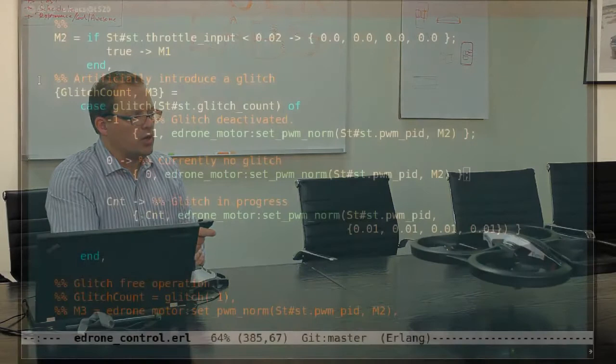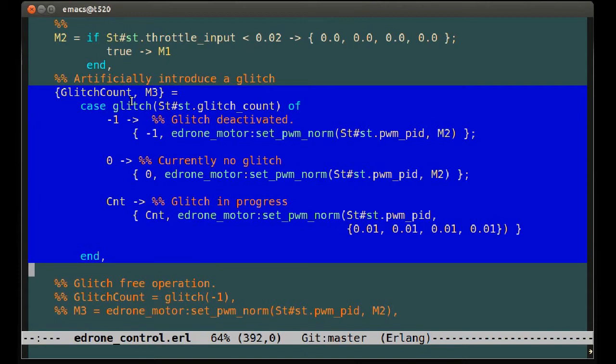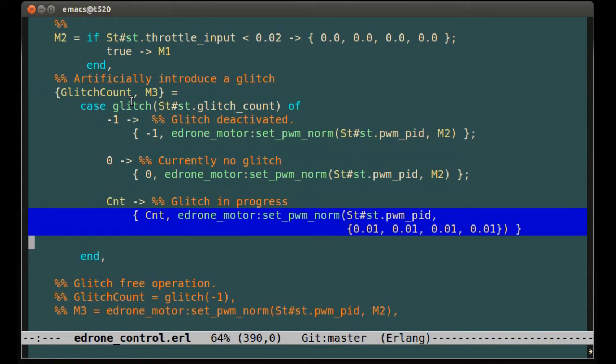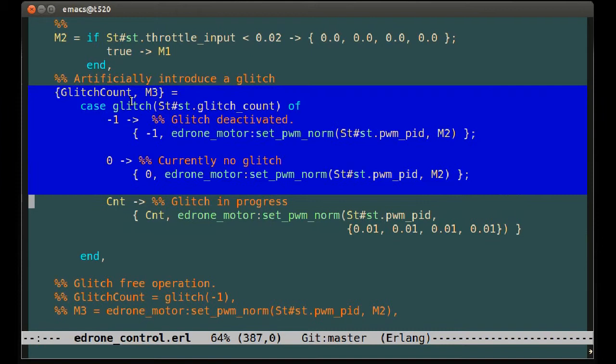If we have a look at the code, we can see that this bug, this glitch, is actually artificially introduced as a part of this demo. Here's the code that contains the glitch, and the actual cutout line is right here, where we set the pulse width modulation of the motors to 0.01, which is idling.